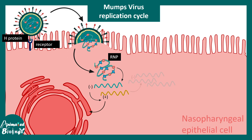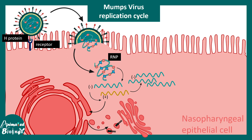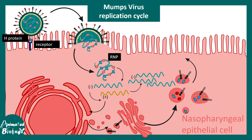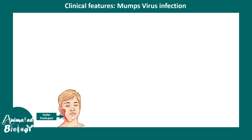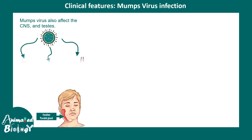This positive-sense RNA can be translated, and more negative-sense RNA is produced using it as an intermediate. The positive-strand RNA ultimately gives rise to many viral proteins and particles, which are transported via the Golgi apparatus. A new virus forms on the surface of the cell and buds out — this is how the mumps virus replication cycle works.